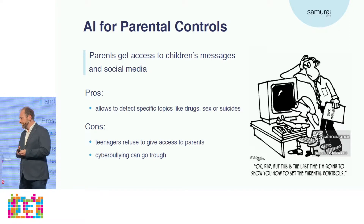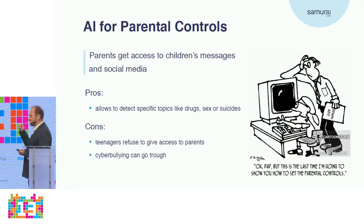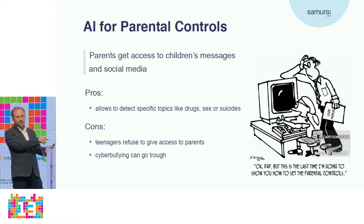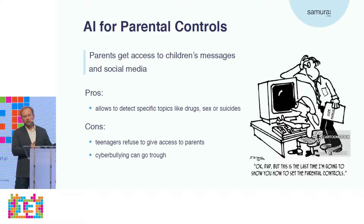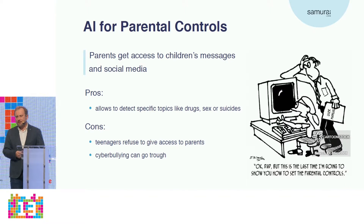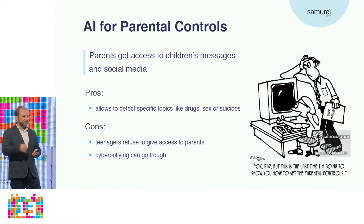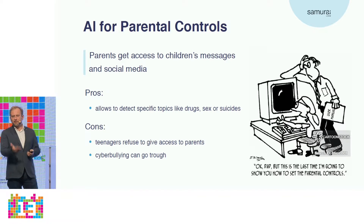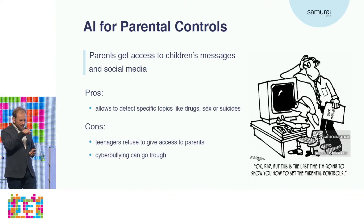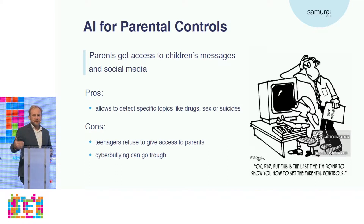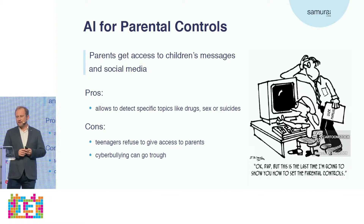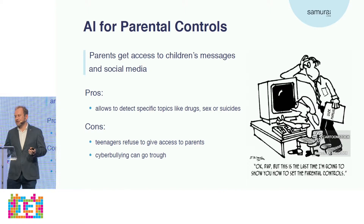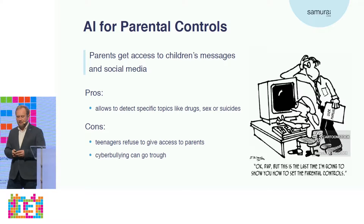There is also artificial intelligence for parental controls. The parent installs an app on their child's phone and gets access to all social media streams. If someone is talking about drugs, suicide, or attacking the child over social media, the app raises an alarm so the parent can investigate. But this is really only suited for very young kids, because teenagers won't give their parents access to their social media accounts.